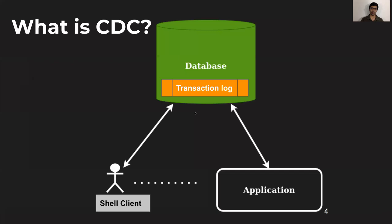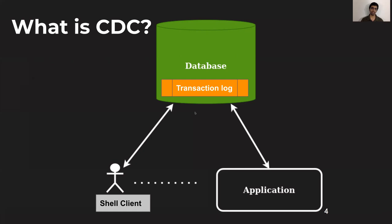For a particular database, you could be writing to it from a shell client or from an application, so changes could be coming in from different systems. We're mainly concerned about inserts, updates, and deletes, which we'll term as mutations for the rest of this talk. When we convert these changes at a database to a stream of events, we have Change Data Capture, or CDC for short. CDC involves capturing data which gets written to a database and sending it to downstream consumers as a stream of events.